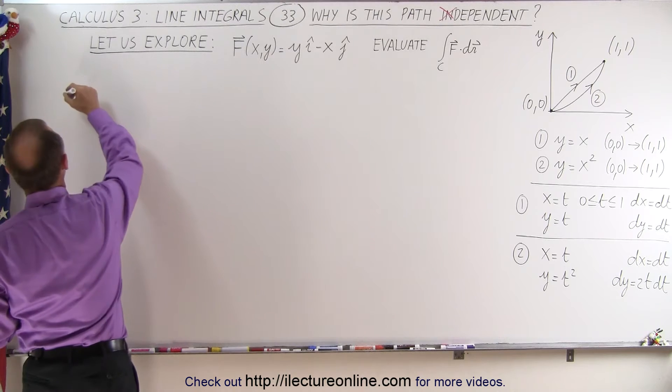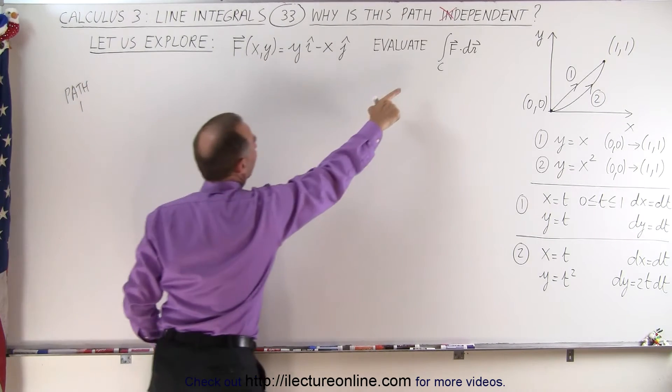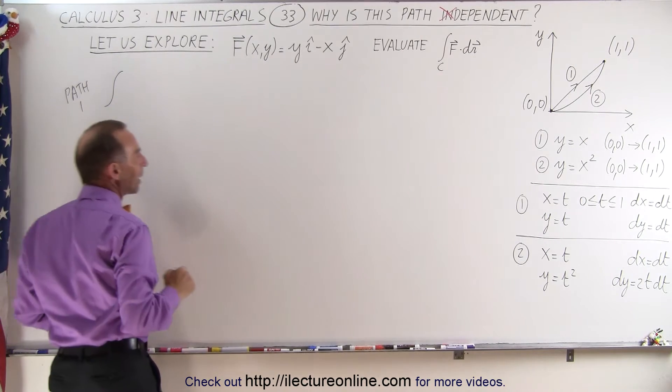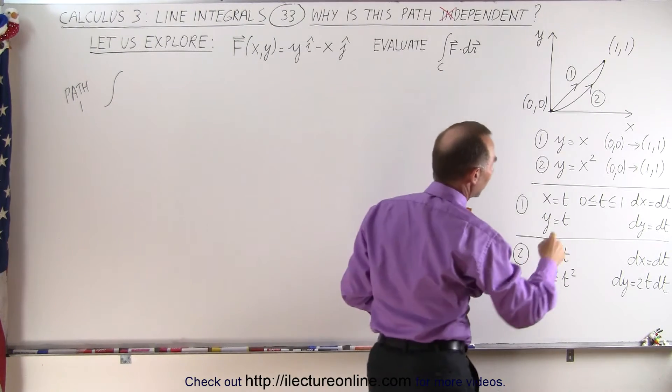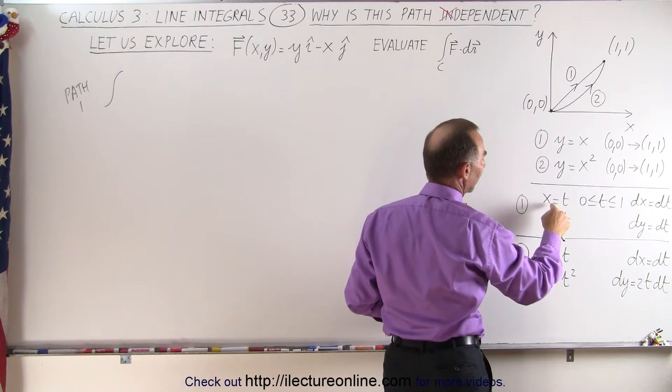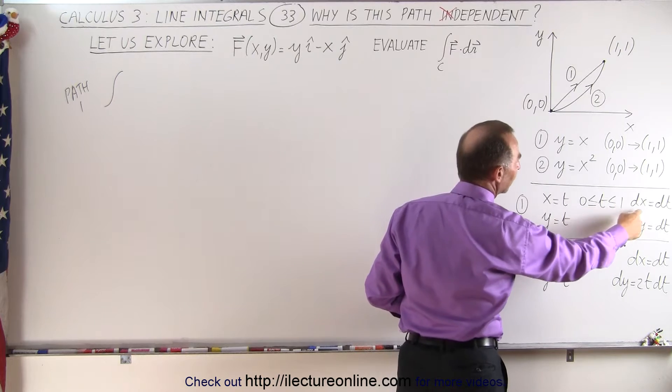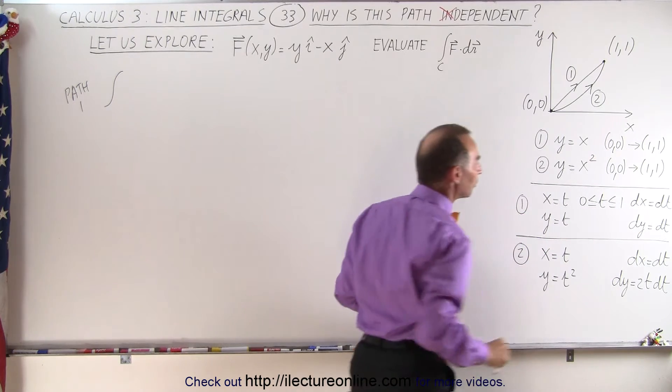So for path 1, this integral right here is going to be equal to, and we're going to evaluate, notice that we're going to use the parametric equations for the line y equals x: x equals t, y equals t, t goes from 0 to 1, and therefore dx and dy are both equal to dt.